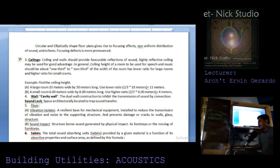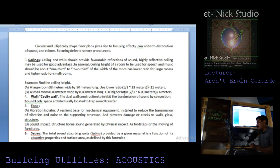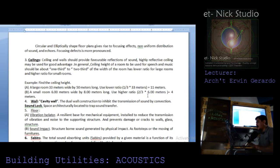Example: Find the ceiling height for a large room 33 meters wide by 50 meters long. Use the lower ratio of one-third: one-third of 33 meters equals 11 meters high from floor to ceiling. For a small room 6 meters wide and 8 meters long, use the higher ratio of two-thirds: two-thirds of 6 meters divided by... the output is 4 meters high.